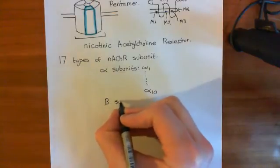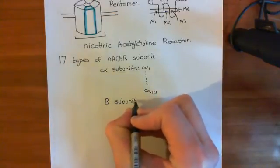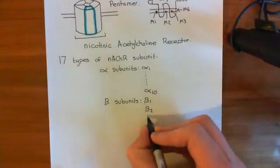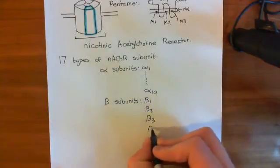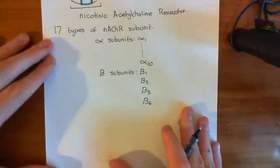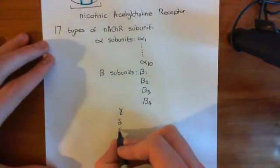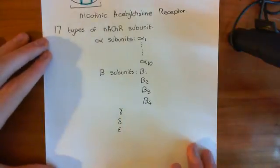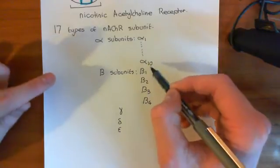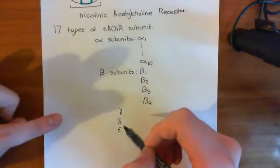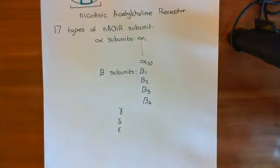The next family is the beta subunits, which contains four different genes: beta-1, beta-2, beta-3, and beta-4. And then finally there is the gamma subunit — there's only one of those — and then delta and epsilon. So that makes up all 17 genes: alpha-1 through alpha-10 (ten), then beta-1 through beta-4 (four more, making 14), gamma is 15, delta is 16, epsilon is 17. These are the 17 genes which encode nicotinic acetylcholine receptor subunits.